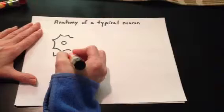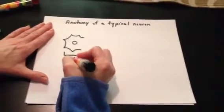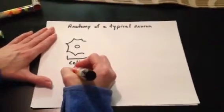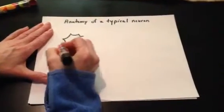This is the cell body, which is also called the pericarrion, but I prefer cell body. This is the nucleus.